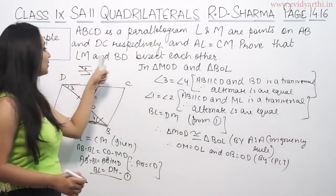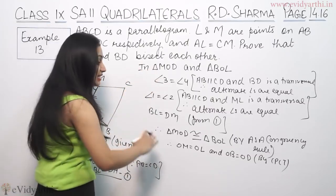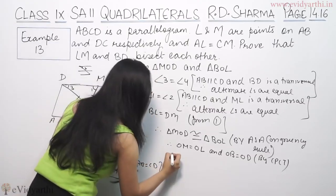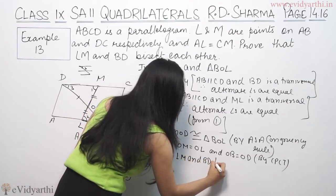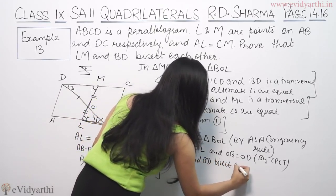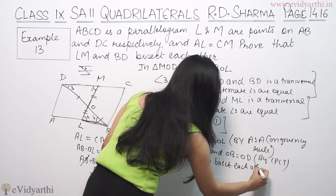This is what we had to prove, that LM and BD bisect each other. Bisect means they divide into equal parts. So LM and BD bisect each other.